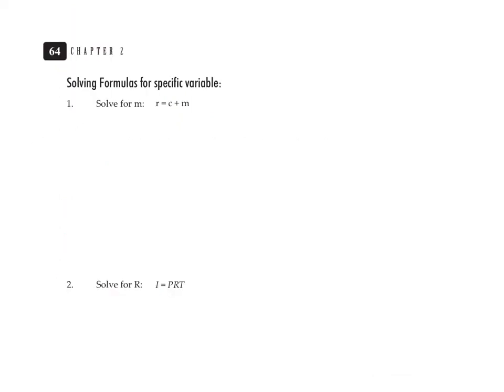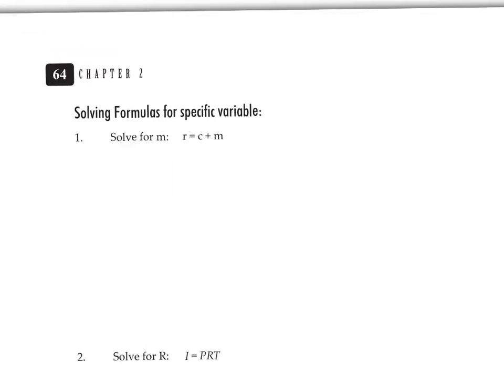On the next page, we have solving a formula for a specific variable. This is retail. Retail price equals cost plus markup. That's what this formula is. The directions ask us to solve for M. The R and the C aren't going to go away. To solve for M, we're just going to isolate the M. The R and the C will end up being on the other side of the equation, but that's okay.